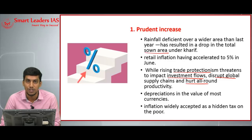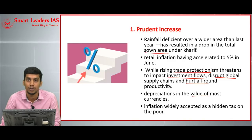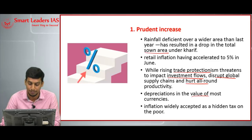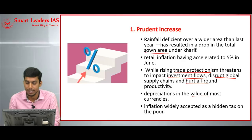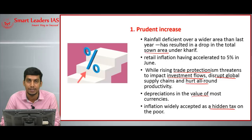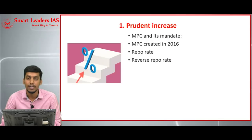There is a depreciation in the value of most currencies belonging to emerging economies against the dollar, which will also lead to inflation. Inflation is widely accepted as a hidden tax on the poor, so it has to be contained. To contain inflation, the MPC — Monetary Policy Committee — has taken the decision to increase the repo rate.